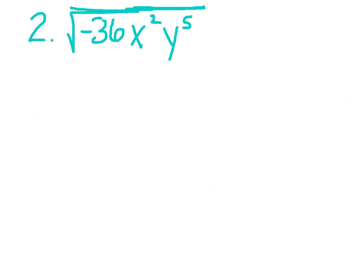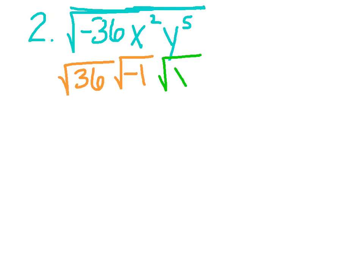Example number 2: the square root of negative 36x squared y to the 5th. 36 right off the bat is a perfect square, so I'm not going to break it down. I'm going to rewrite it as the square root of 36, and I'm going to take that negative and rewrite it as the square root of negative 1. Let's jump to our x's. I need a perfect square, and it is a square, so I'm going to rewrite this as the square root of x squared — I only need that one because it matches up.